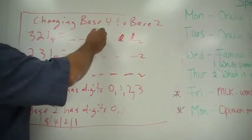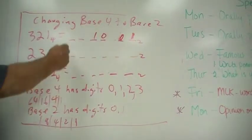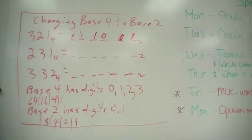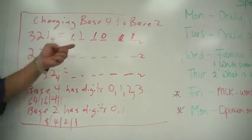The 2 would be 1, 0, and the 3 would be 1, 1, 2 and 1 is 3. So we'll just change that from base 4 to base 2.